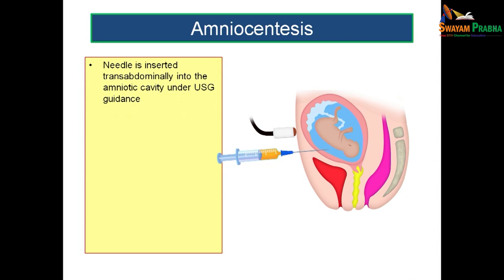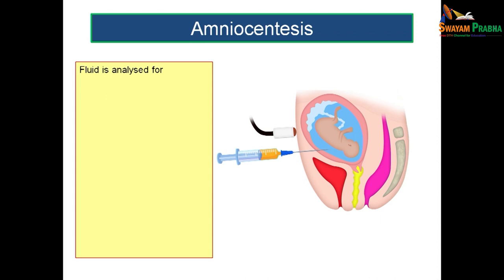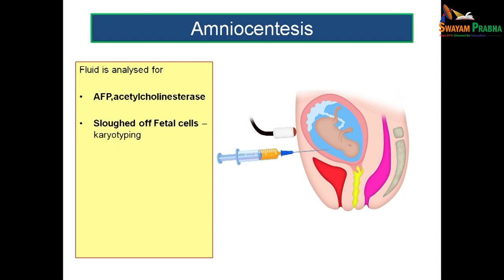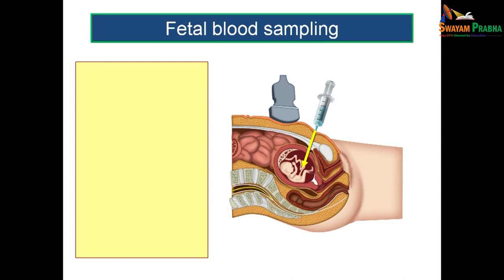Amniocentesis is an invasive procedure where a needle is introduced transabdominally under ultrasound guidance to withdraw 20 to 30 ml of amniotic fluid. It is not performed before 14 weeks because the fluid volume is very low and there is a high risk of injuring the fetus. The fluid is analyzed for alpha-fetoprotein, acetylcholinesterase, fetal cells for karyotyping, and polymerase chain reaction and genotyping to rule out genetic anomalies.